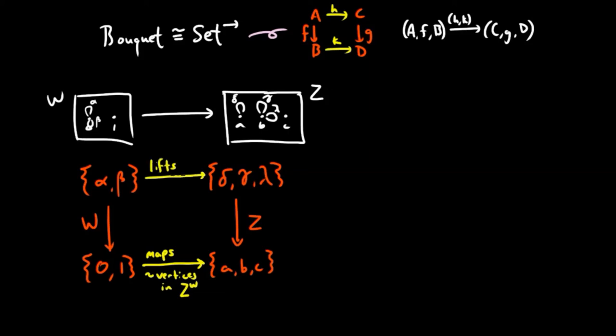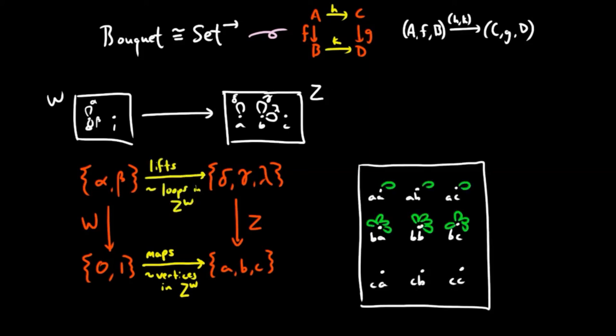And the number of petals are the number of lifts of this map. So for example, the petal gamma lambda in Z to the W corresponds to the commuting square, where the map gamma lambda lifts the map BB along the maps corresponding to W and Z.